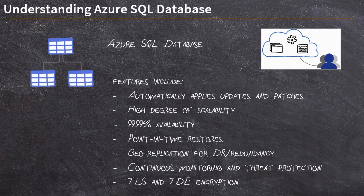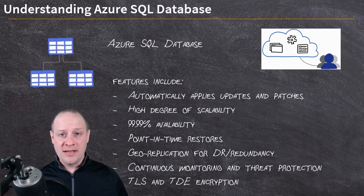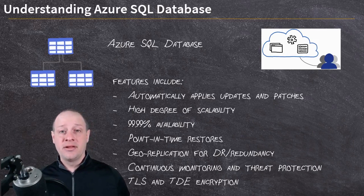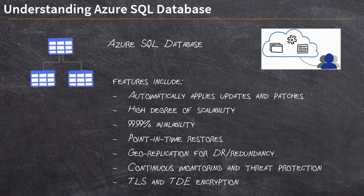99.99% availability is the baseline availability granted in the SLA for Azure SQL Database. They even have some higher price tiers at 99.995% availability, so if you have a really high-availability need, that option is available to you. You've also got great point-in-time restore options, as well as geo-replication for disaster recovery and redundancy.